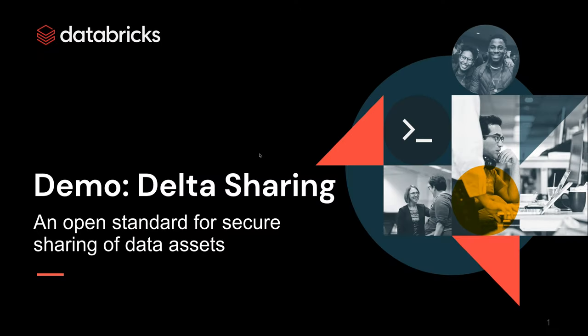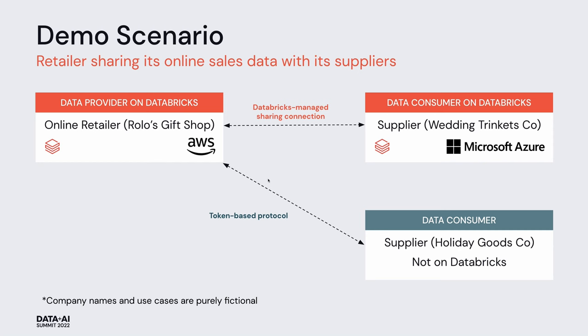In this demo, we will show how an organization can use Delta Sharing to seamlessly share live data from the lake house with another organization on any computing platform. In this fictional scenario, an online retailer called Rolo's Gift Shop is a data provider using Databricks on AWS. They want to share their online sales transaction data with two of their inventory suppliers.